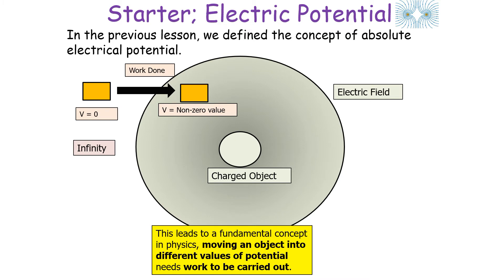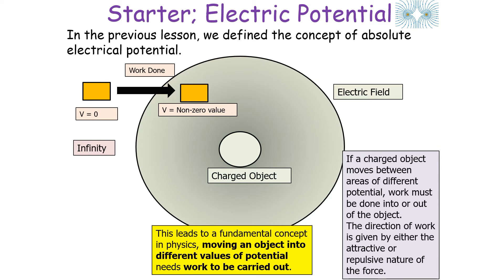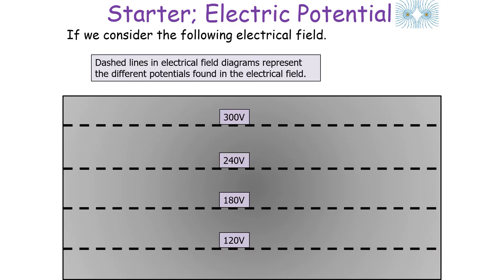This leads to a fundamental concept in physics: moving an object into different values of potential requires work to be carried out on the object. So if a charged object moves between areas of different potential, work must be done into or out of the object, and the direction of this work is given by either the attractive or repulsive nature of the force.